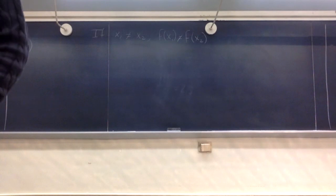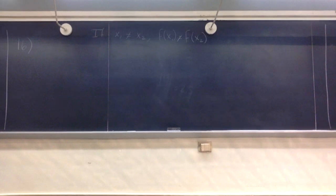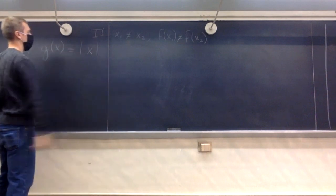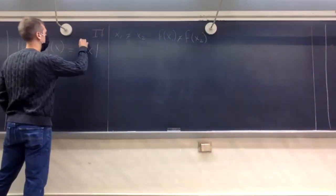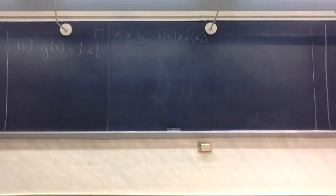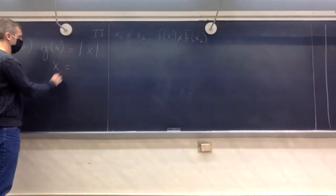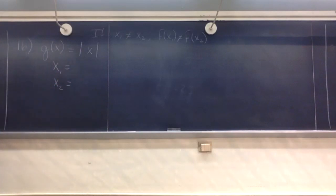These are the things you deal with all the time outside of academics. But it's not always easy to determine if something is or is not a one-to-one function. Question 16 asks about the absolute value of x — is it one-to-one or not? What if we pick different inputs that are different but we get the same output? If we can do that, then this function is not one-to-one.